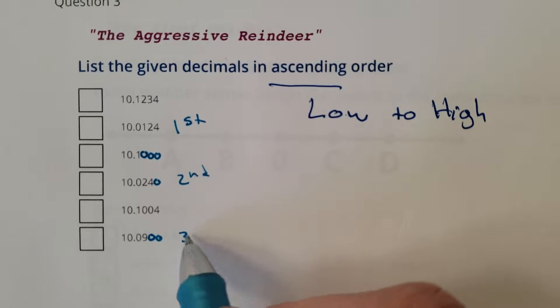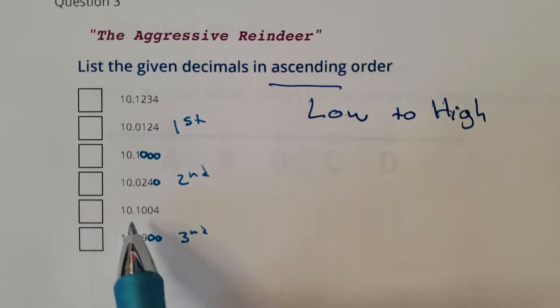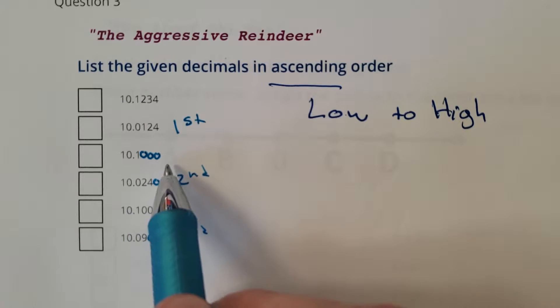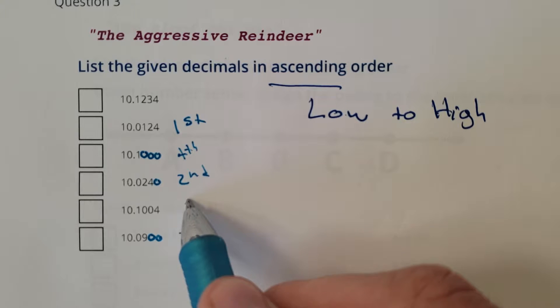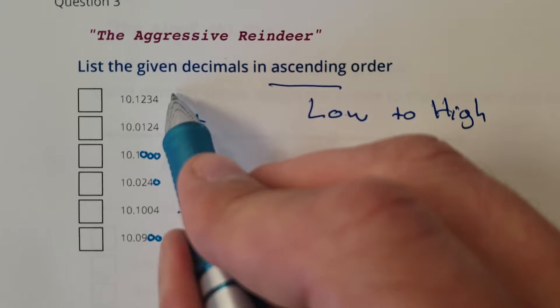The next number after 900 - we have 1004, we have 1000, and then we have 1234. So 1000 would be next, so you're fourth place. 1004 would be fifth place, and then you're sixth place.